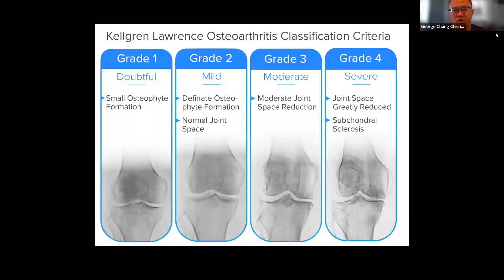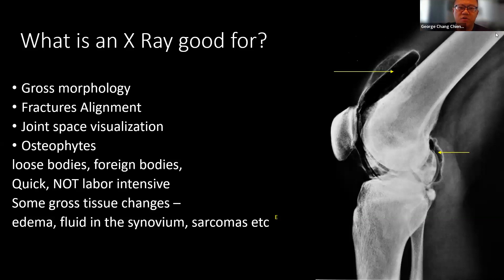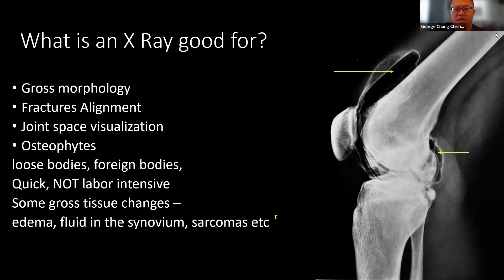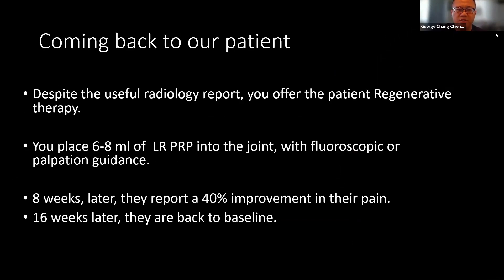We won't see sclerotic changes or joint space narrowing on x-ray until you've progressed beyond early disease. X-ray is good for alignment, gross morphology, joint space visualization, osteophytes, loose bodies, foreign bodies, and effusion — they're quick and not labor-intensive. But x-ray is not good at identifying soft tissue structures. In most places it's really just used as a first screening tool.